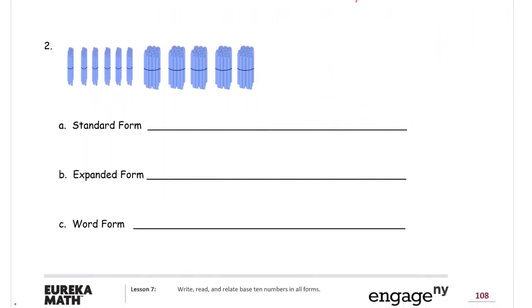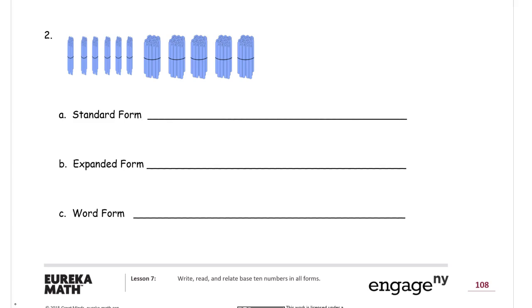Alright, so now try this one on your own. Pause it and we'll see - there's a little bit tricky here. They put the tens first, right? One, two, three, four, five, six tens, which is sixty. And then hundreds - one, two, three, four, five hundreds. That's five hundred sixty.